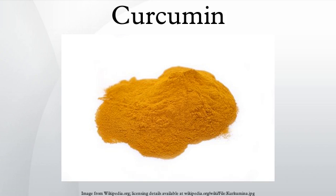Curcumin can be used for boron quantification in the curcumin method. It reacts with boric acid to form a red color compound, rosocyanine. Curcumin is a bright yellow color and may be used as a food coloring. As a food additive, its E-number is E100.